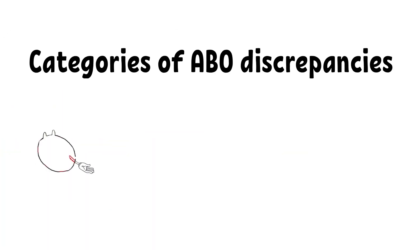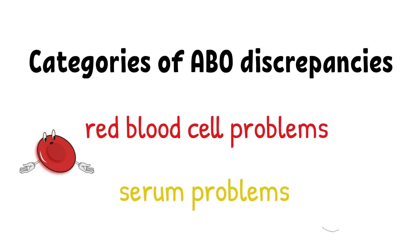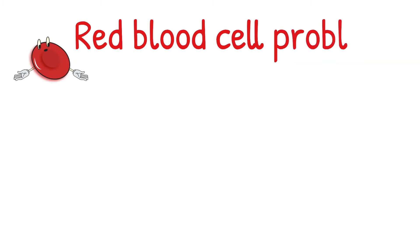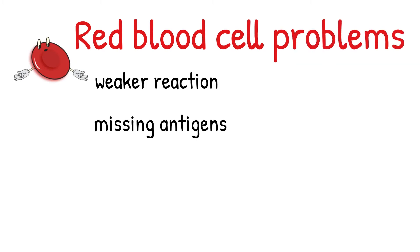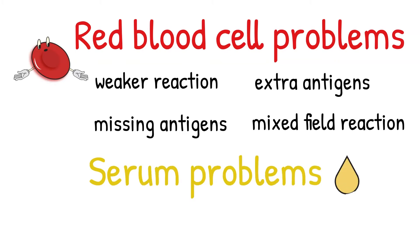There are different ways to category the discrepancy, but I like to group them into two groups: red blood cell problems and the serum or plasma problem. The red blood cell problem is when weaker reacting due to missing antigens or having an unexpected reacting due to extra antigens or having mixed field reactions. The serum problem is also when weaker reactions or missing reactions but due to missing antibodies or having an unexpected reactions due to extra antibodies.